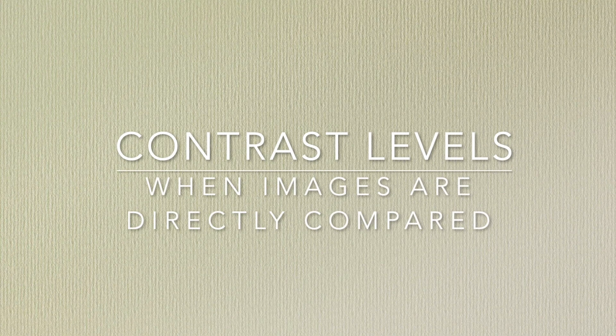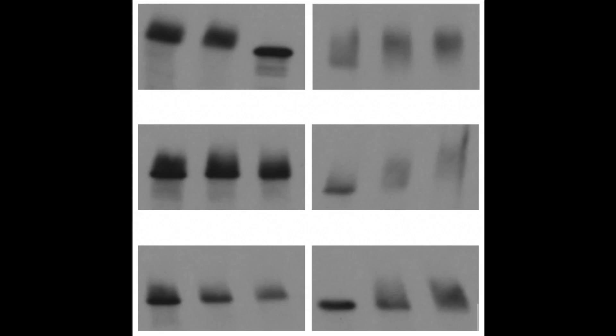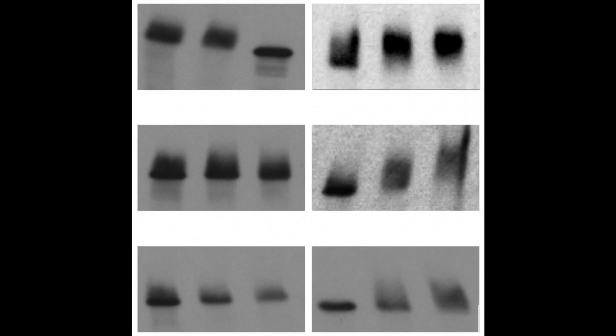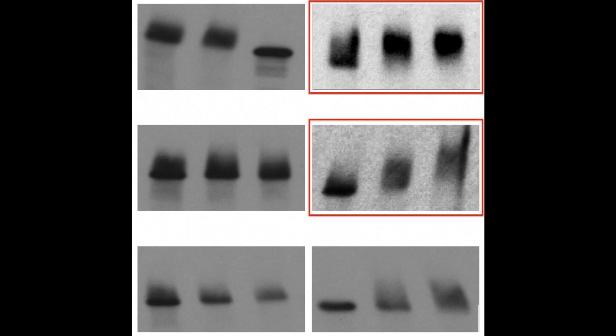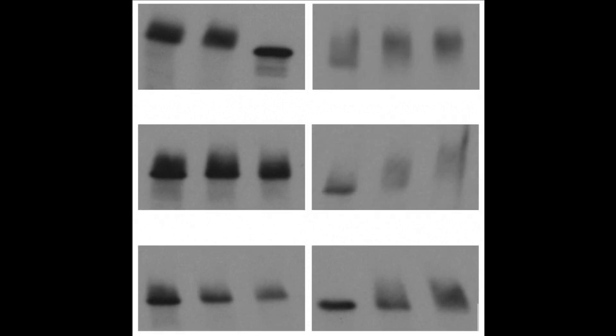Also watch out for contrast adjustment across images that are directly compared to each other. For images to be accurately compared, they should be acquired with identical settings, and any processing should also be identical. The two marked-up panels on the right here have been contrast adjusted, and the signals now appear much stronger relative to the ones on the left. This does not accurately represent what was observed in the experiment.